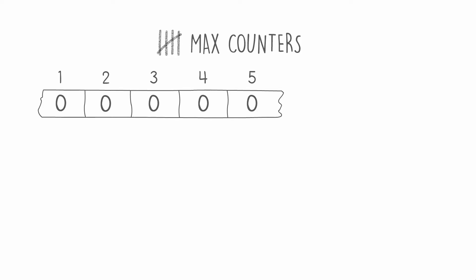It can be an increase of a particular counter or a max counter. The best way to explain this problem is by walking through a concrete example. Let's assume we receive n equals 5, five counters, and walk through a simple list of instructions.